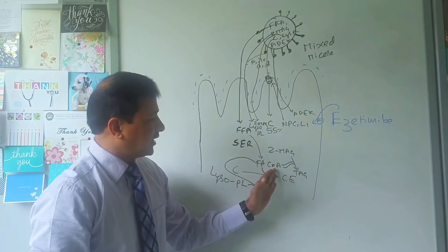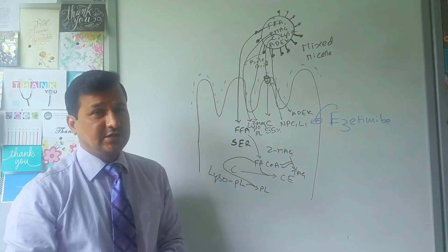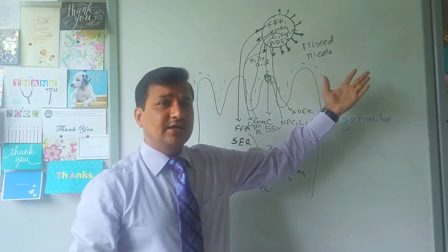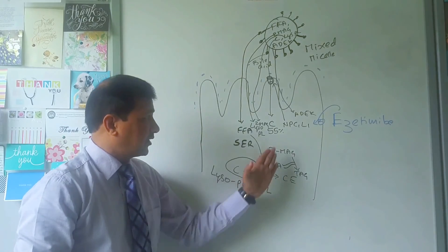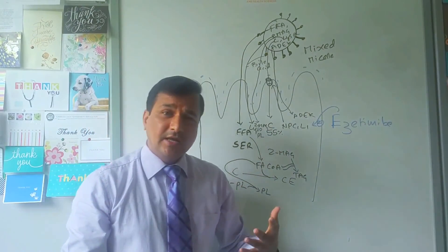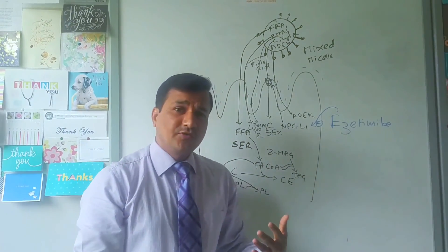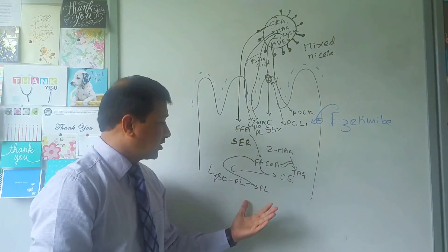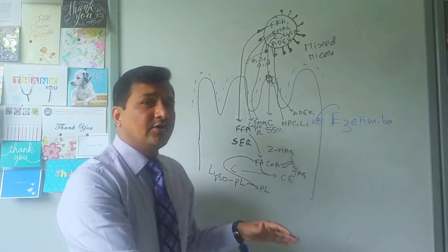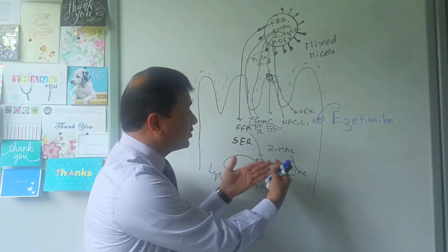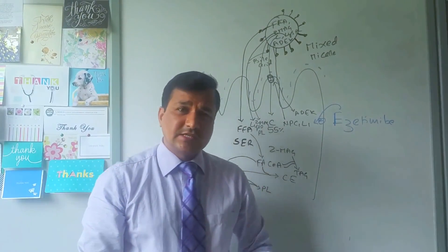To summarize re-esterification: free fatty acid is activated to fatty acyl-CoA, which combines with cholesterol to form cholesterol ester, with lysophospholipid to form phospholipid, and with 2-monoacylglycerol to form triacylglycerol. So all the lipids are being re-esterified.